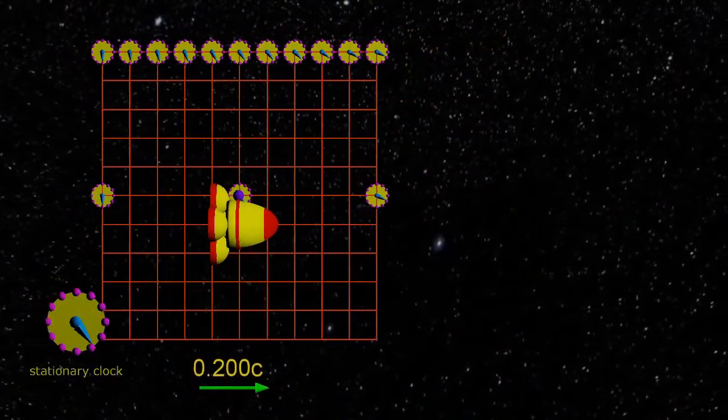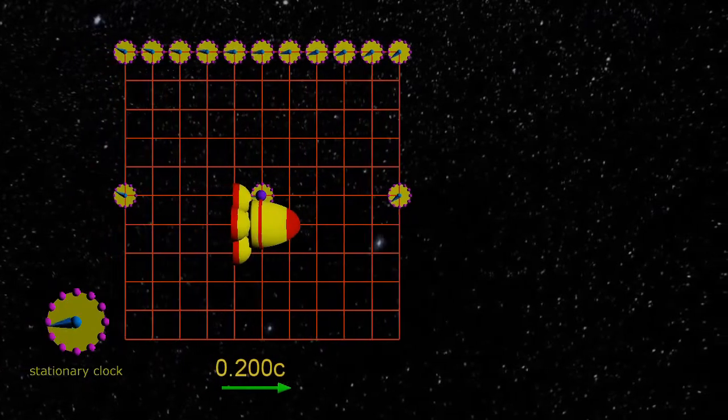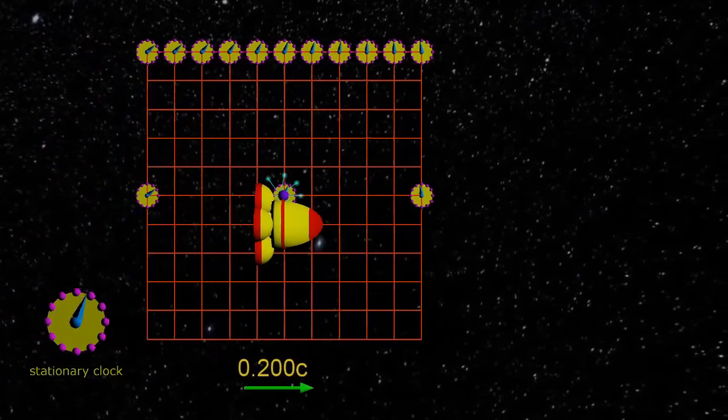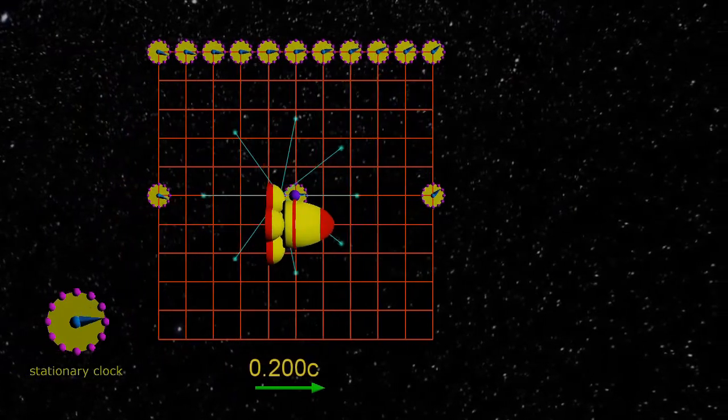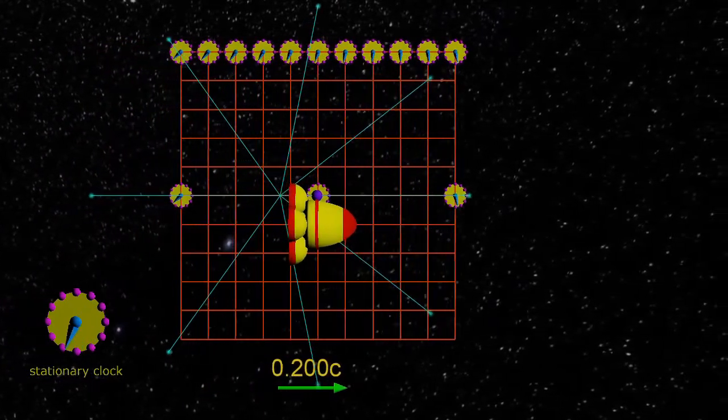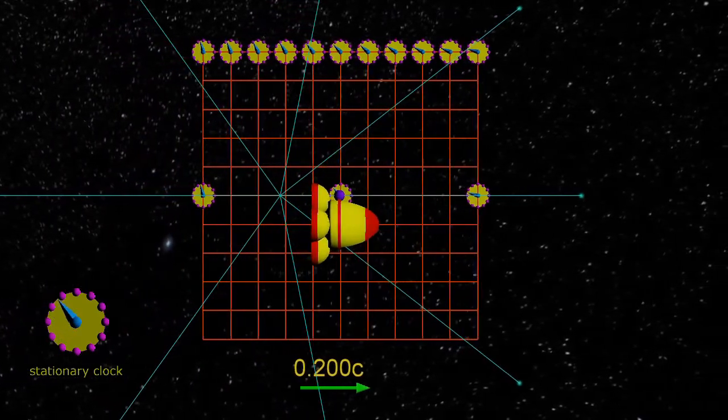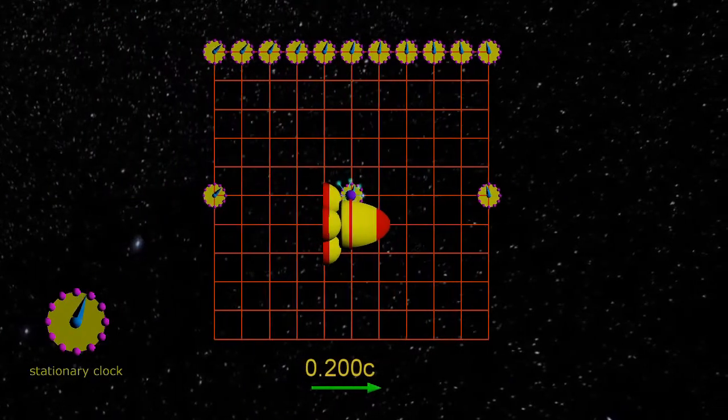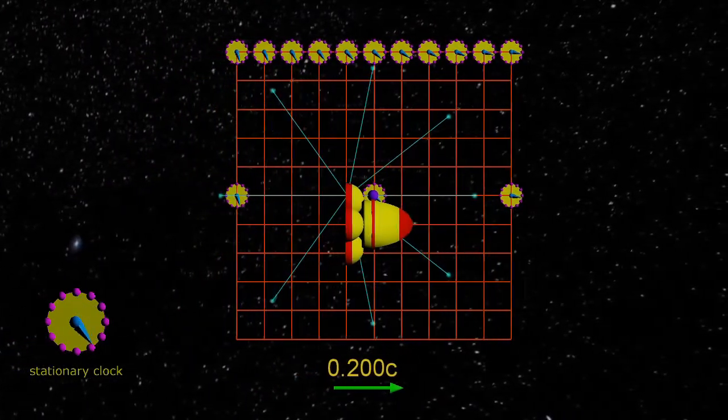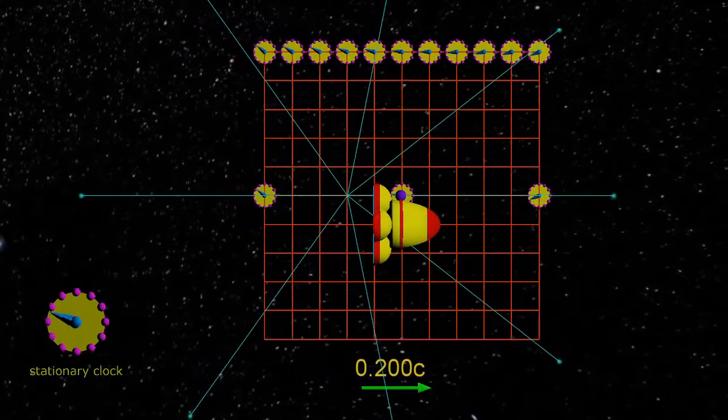With the spacecraft moving at 0.2c, the most obvious distortion is the distortion in time. The clocks are now no longer synchronized. The leftmost clock is ticking ahead of the rightmost clock. We are experiencing the left side in the future compared to the right.